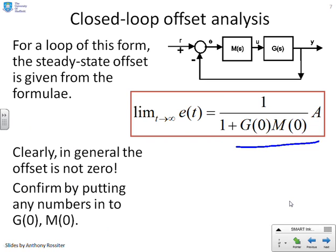Here's the formula that we're using to calculate the offset. It's 1 over 1 plus G of 0 times M of 0 or times A. And you will see that this will nearly always give a non-zero number.